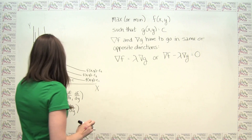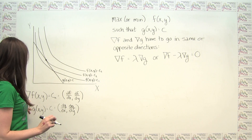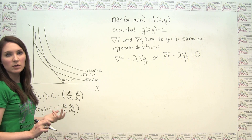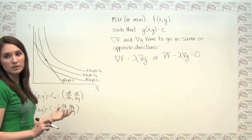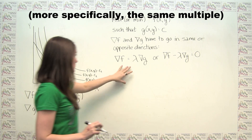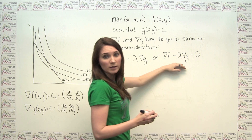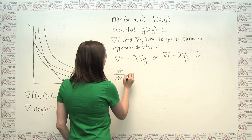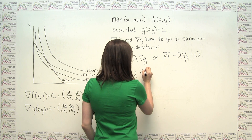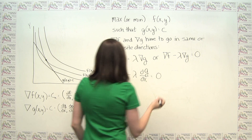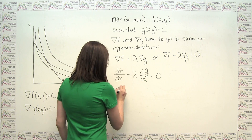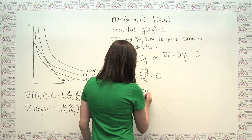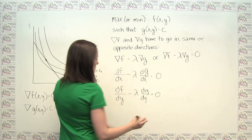Using the definitions of the gradient functions, since the gradient of f equals (∂f/∂x, ∂f/∂y) and the gradient of g equals (∂g/∂x, ∂g/∂y), one vector being a scalar multiple of the other means each component is a multiple of the other. This implies: ∂f/∂x minus lambda times ∂g/∂x equals zero, and ∂f/∂y minus lambda times ∂g/∂y equals zero.